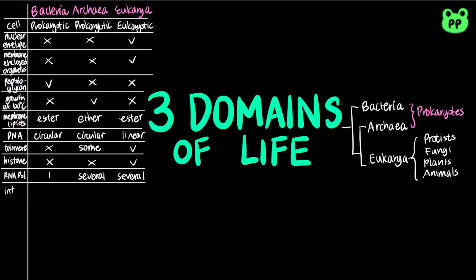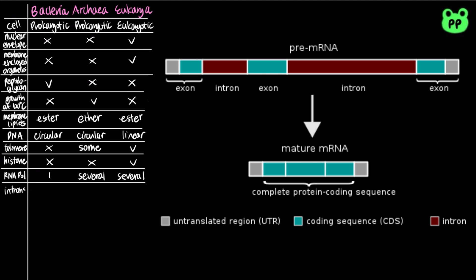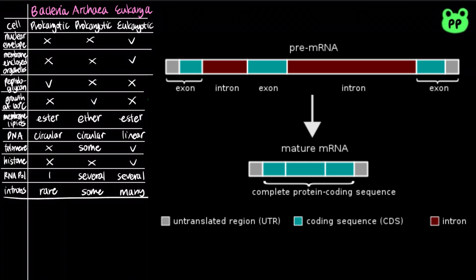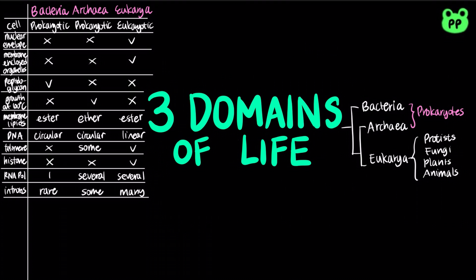Eukaryotic DNAs contain introns, which are long stretches of non-coding DNA found between coding regions. Some archaea also have introns, whereas bacteria rarely have introns.